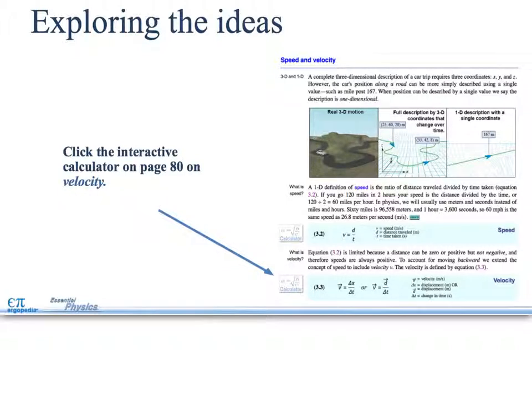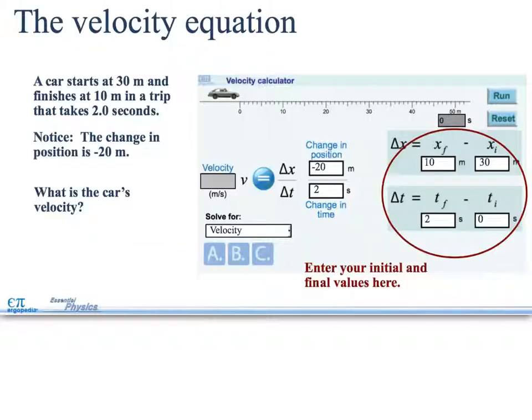Click the investigation on page 80 also for velocity. Now you have the velocity calculator. A car starts at 30 meters, and it finishes at 10 meters in a trip that takes 2 seconds. Notice the change in position is negative 20 meters. What is the car's velocity?